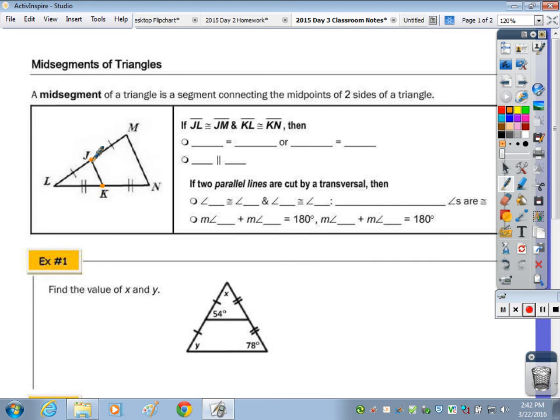So the properties from our exploration this morning with the warm-up is that the length of JK is how much of MN? Half. If you don't want to work with the fraction, you could also say that the length of JK, if I double that, I get MN. And JK is parallel to MN.